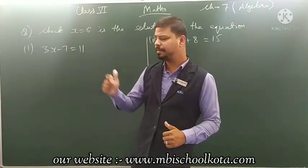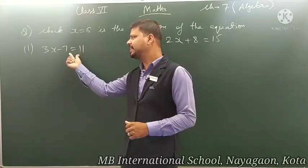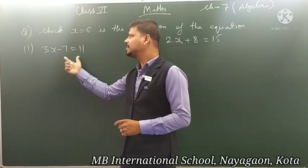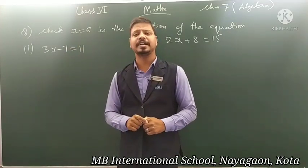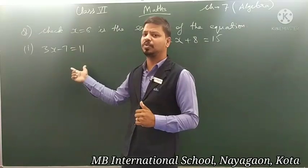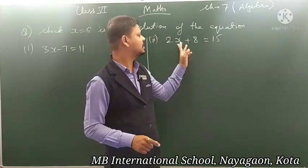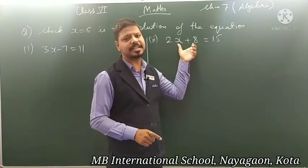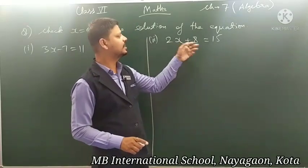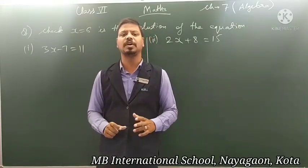The method is: a linear equation is divided into two parts — LHS and RHS. When x is equal to 6, if LHS becomes equal to RHS, then we say that x equals to 6 is the solution, or the root, of this equation. So we will put x = 6 into the equation and check whether LHS and RHS are equal or not. If they are equal, it means x equal to 6 is the solution, or the root, of this equation.